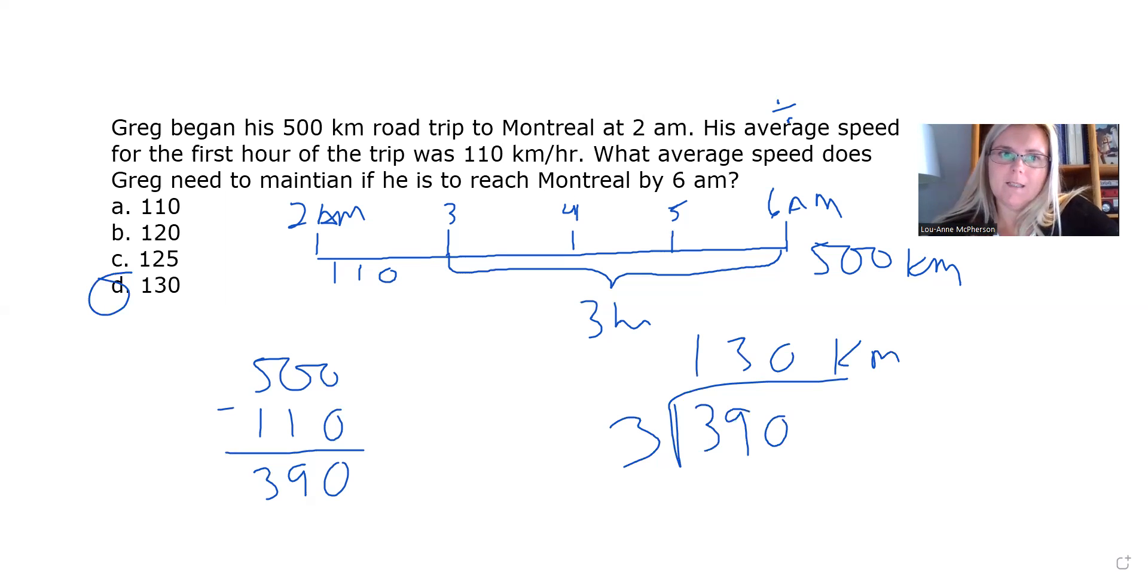What average speed does Greg need to maintain if he's to reach Montreal by 6 a.m.? Well, he's got 390 kilometers left to travel after traveling 110 kilometers, and three hours left to do that in, so when you divide 390 by 3, that's going to give you a total of 130 kilometers. He will have to travel each hour to maintain his end time at 6 a.m.